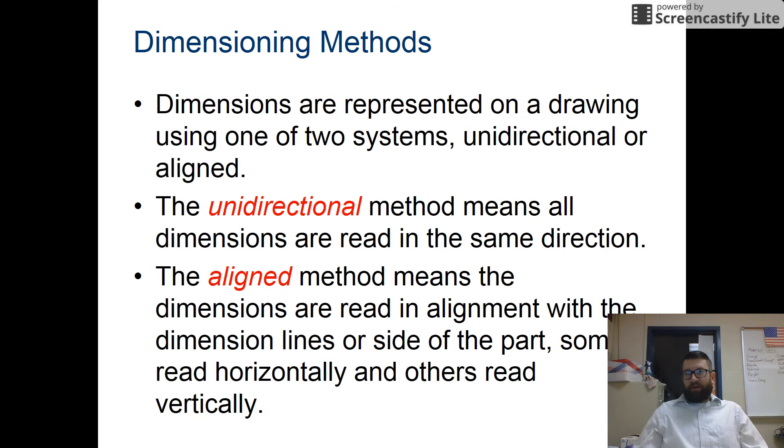So dimensions are represented on a drawing. Unidirectional means all the dimensions are read in the same direction. The aligned method means the dimensions are read in alignment with dimension lines or side of the part. Some of these read horizontally, and others read vertically. So we'll show you some examples of this here going forward.